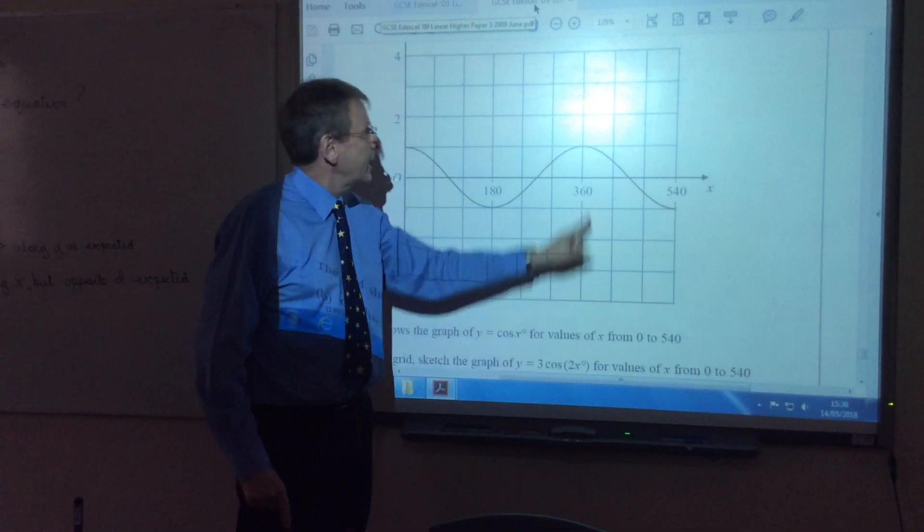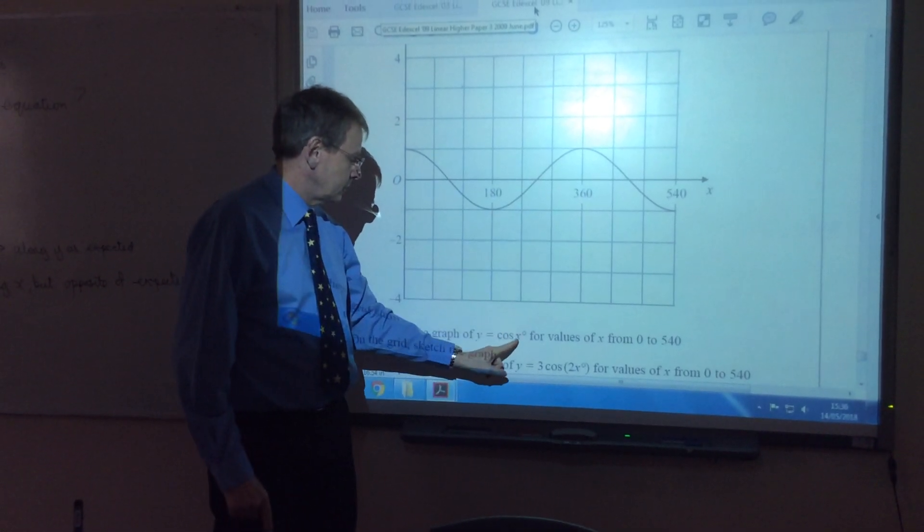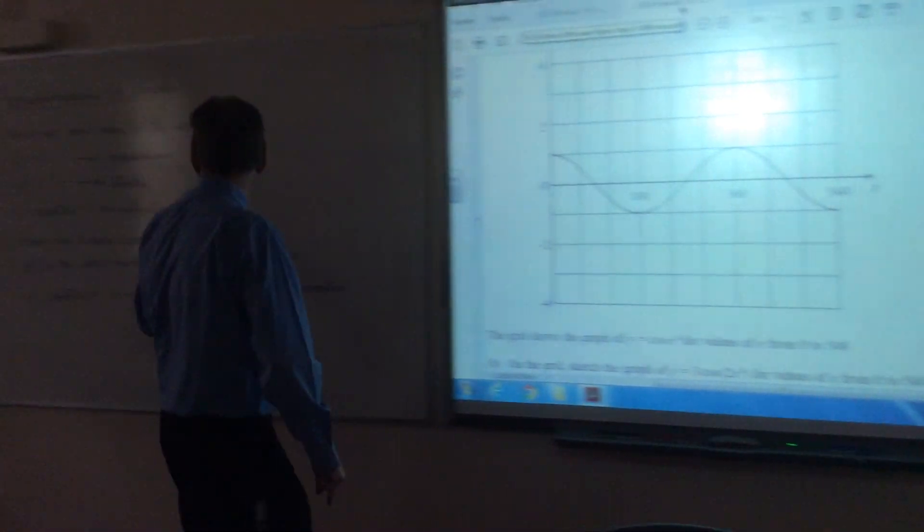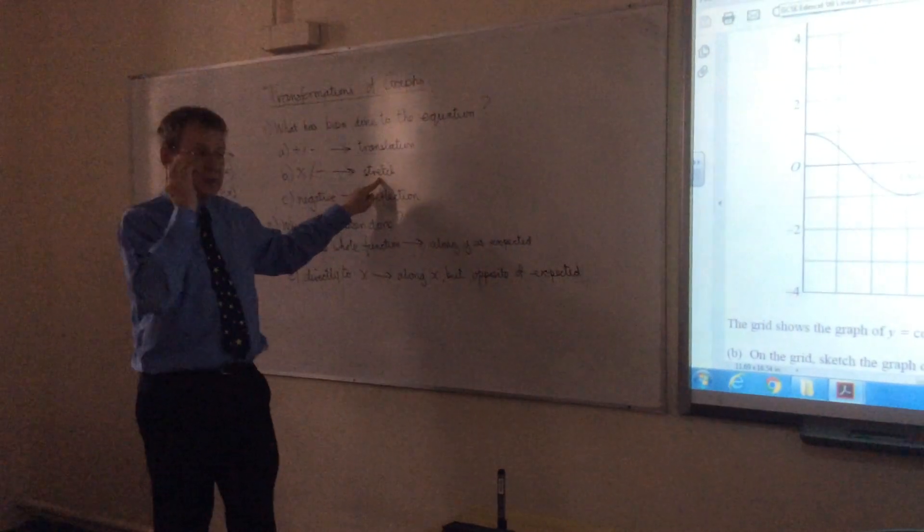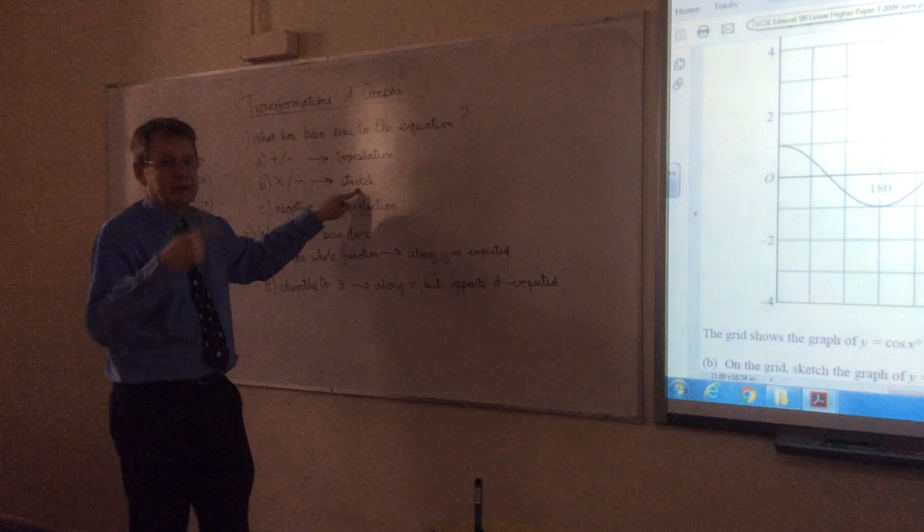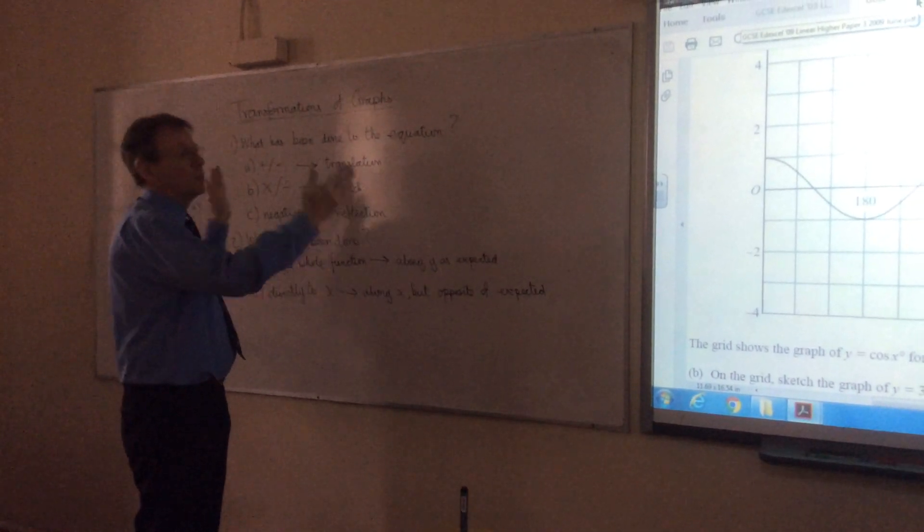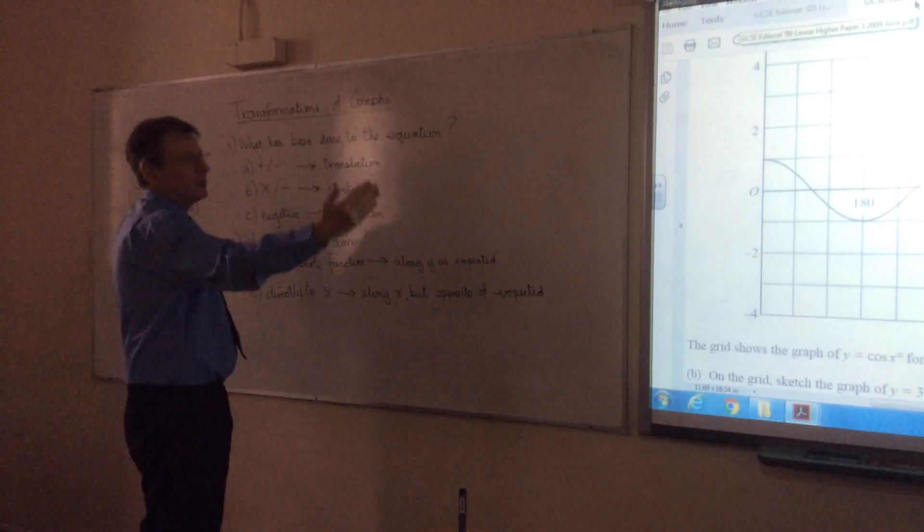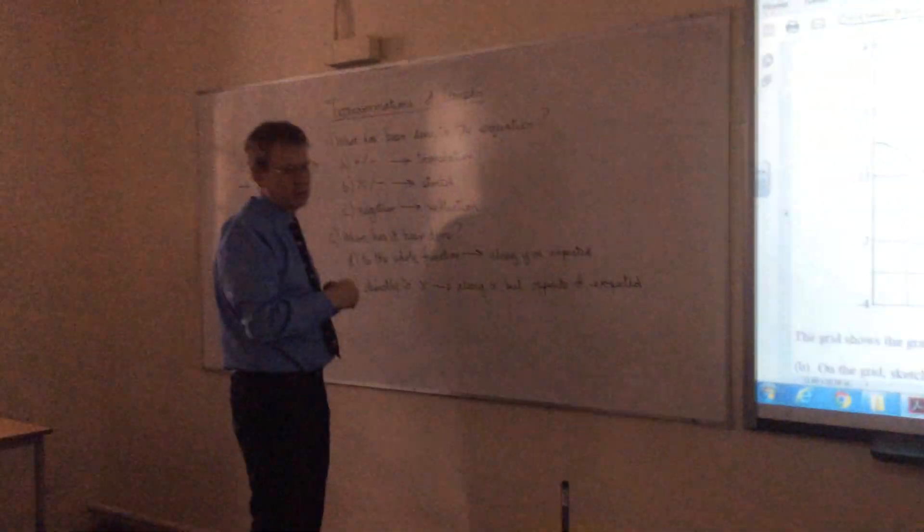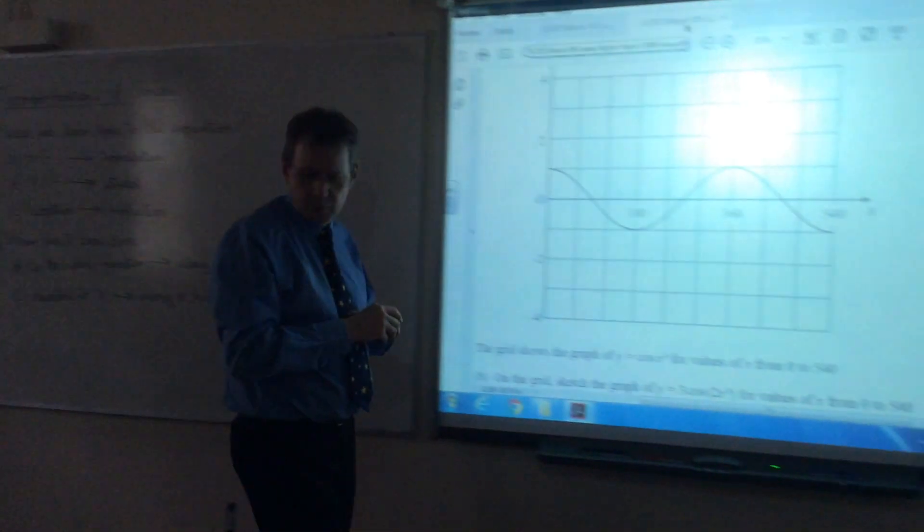But at the same time, we've also got the x multiplied by 2. So there's a second stretch. But this time, because it's done to x, it will be along the x-axis. And 2, again, just like the previous example, would be stretch factor half. So we've basically got to halve it that way and times it by 3 that way.